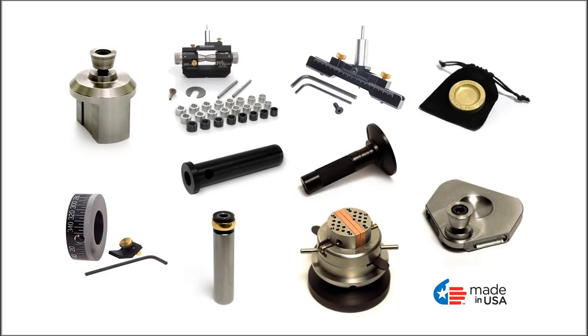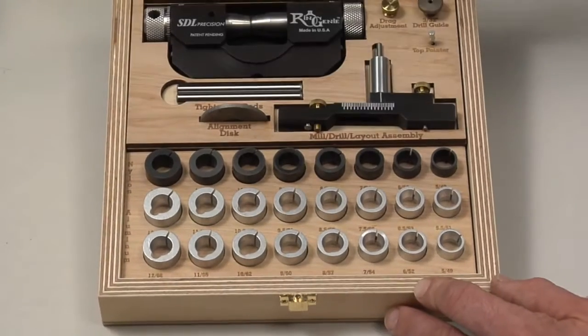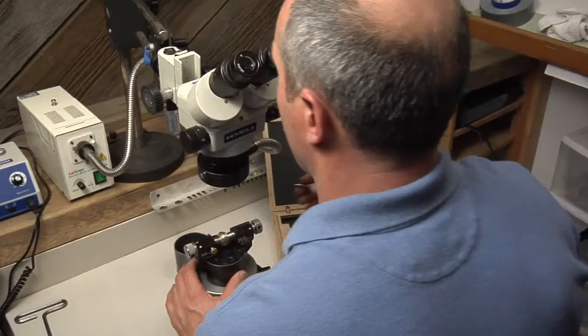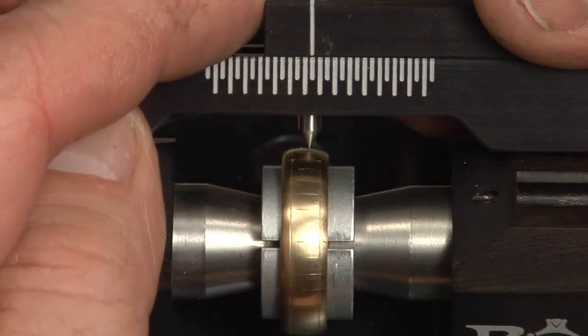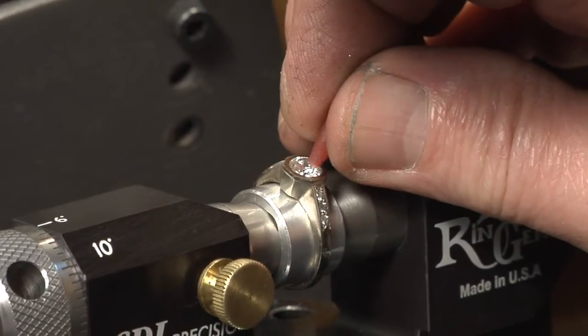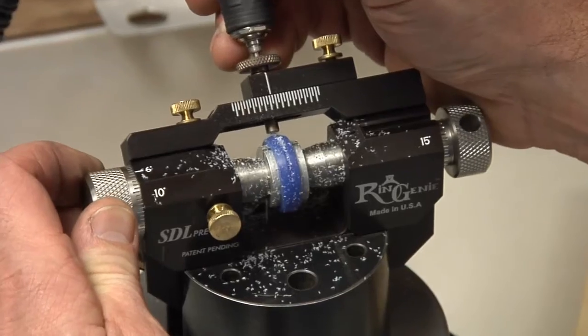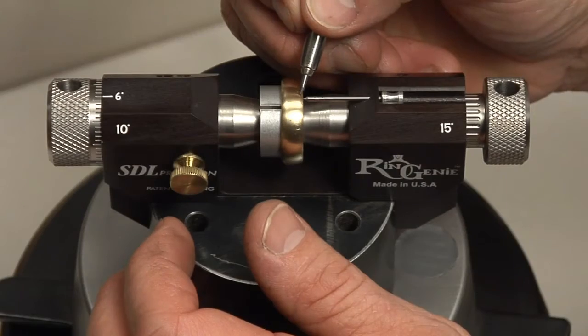Now, let's take a closer look at the Ringgenie. Right out of the box, the Ringgenie has everything you need to make quick and easy work of layout, engraving, inlaying, stone setting, bright cutting, bead setting, and any other task a jeweler or engraver may encounter.